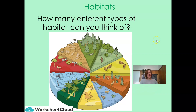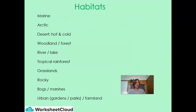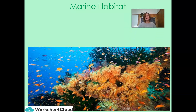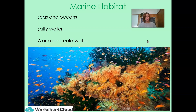Let's start with different habitats. A habitat is a place where an animal lives. By looking at this picture, can you identify different kinds of habitats? There are many different habitats where plants and animals can live: a marine habitat, an arctic habitat, a desert — which is hot or cold — woodland or forest, river or lake, tropical rainforests, grasslands, a rocky habitat, a bog or a marsh, or an urban habitat like your garden or park, or even farmland. The first habitat we're going to look at is a marine habitat. Marine habitats can be the seas and the oceans, and generally they have salty water, which can be warm or cold.